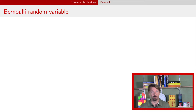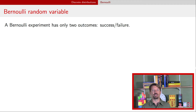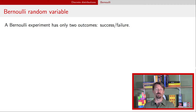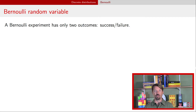Bernoulli random variables are any kind of experiment where you only have two possible outcomes. Usually we refer to those two outcomes as success and failure, but really it doesn't matter — you can call them whatever you want. The key is that there has to be two outcomes. Any experiment you want to run could be dichotomized, meaning you could change it to have only two possible outcomes. For instance, if you had a continuous variable as the outcome, you just say: is it greater than some number or less than some number? So any experiment we have could be put in this framework of a Bernoulli random variable.